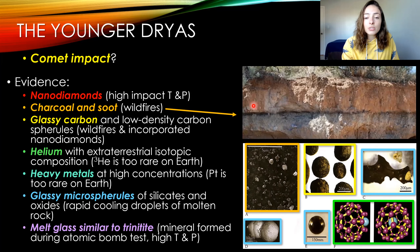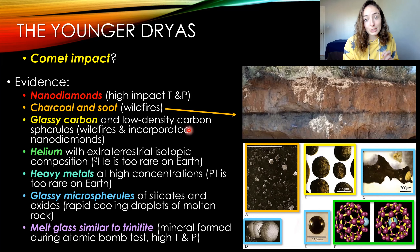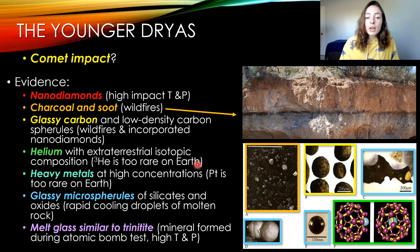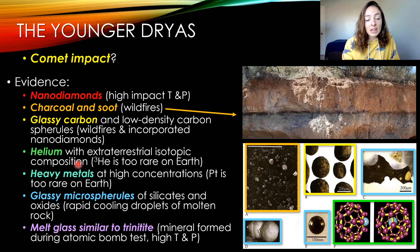Right at this time interval in the rock record, we see a dark layer of sediment containing a variety of extraterrestrial material evidence. These include nanodiamonds, which when formed at the surface of Earth indicate the high temperature and pressure associated with an impact. We also find charcoal and soot from major wildfires that comet impacts would have caused, as well as glassy carbon and low-density carbon spherules formed by those wildfires.